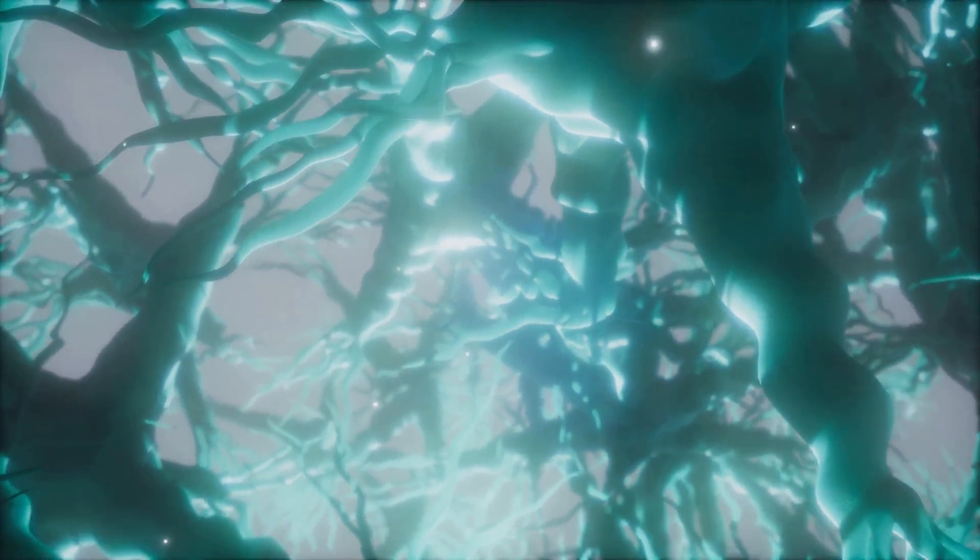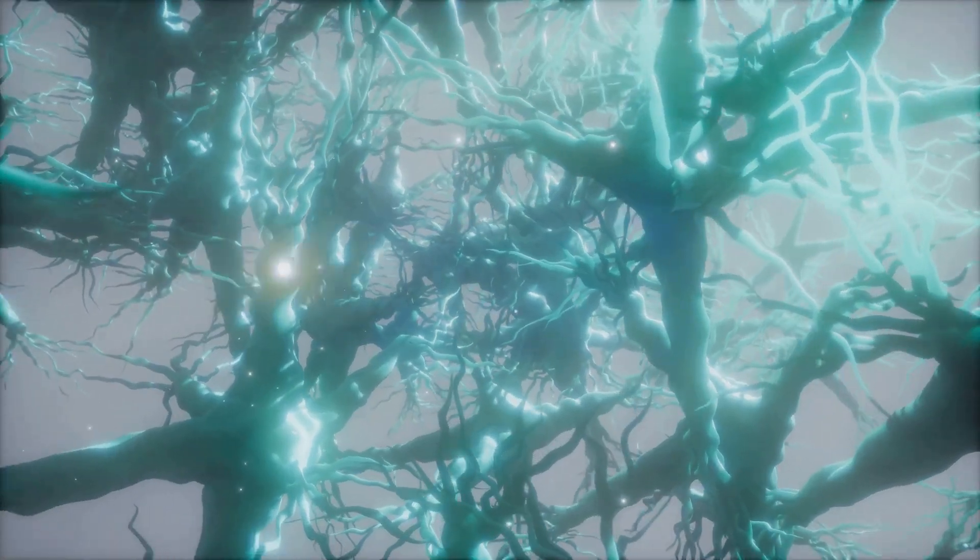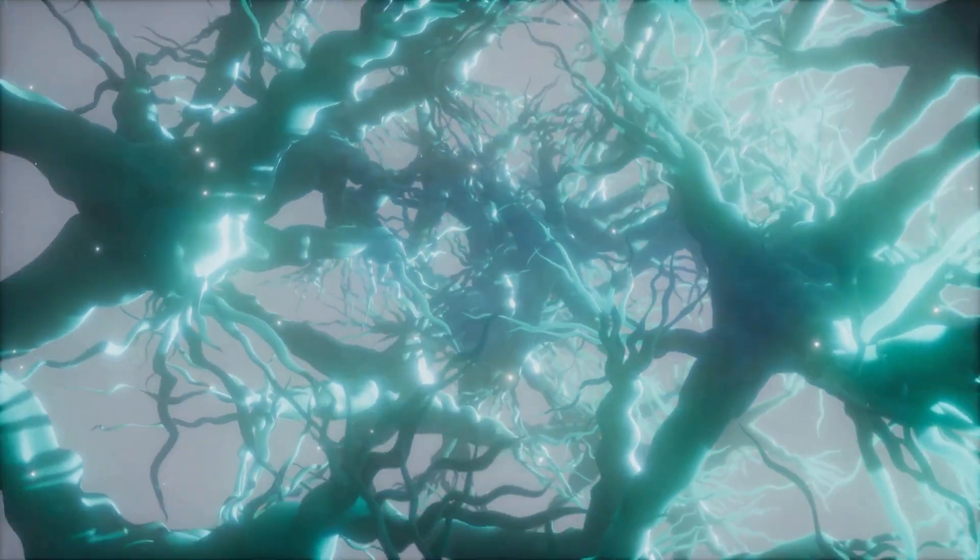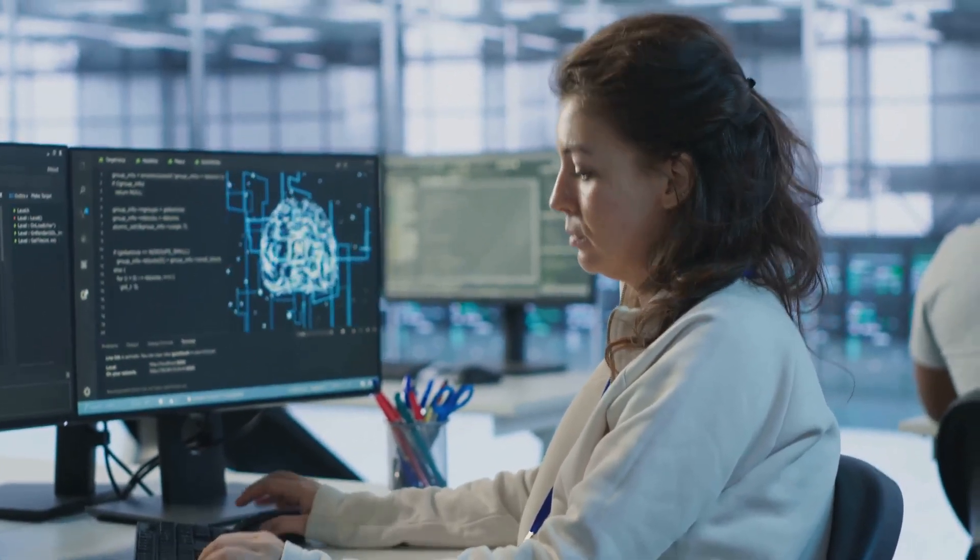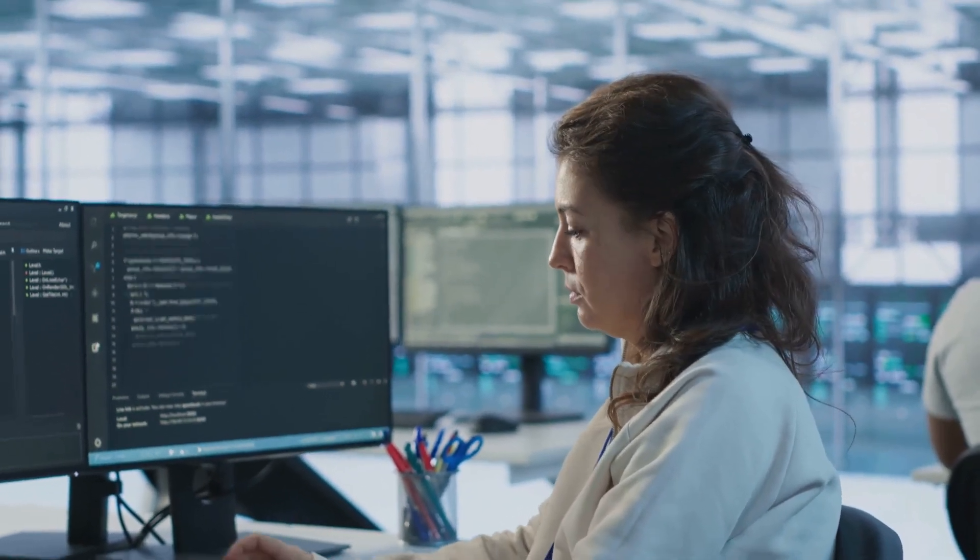Just like their biological counterparts, artificial neurons receive, process, and transmit information. They take in input, apply a function to it, and produce an output which can then be used as input for other neurons in the network.